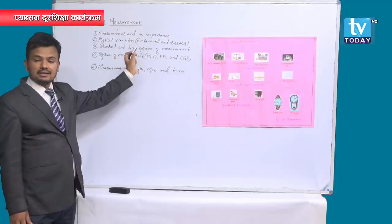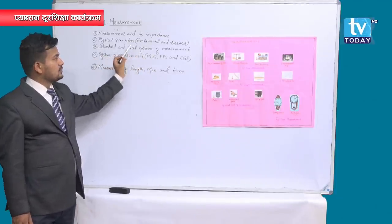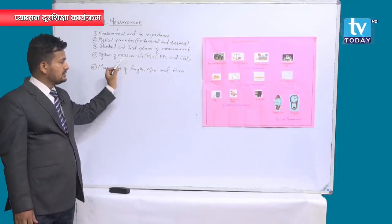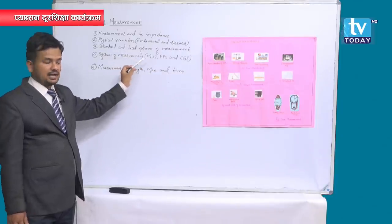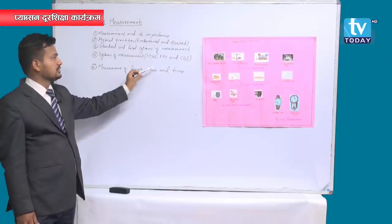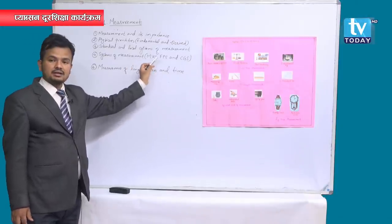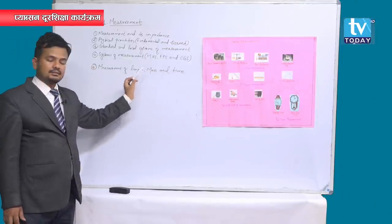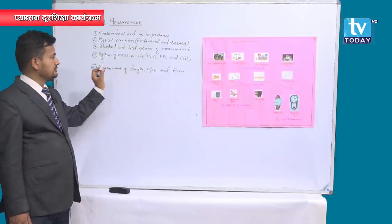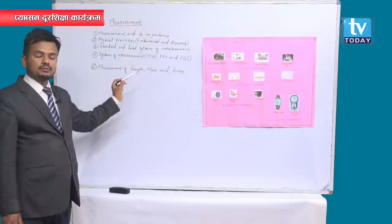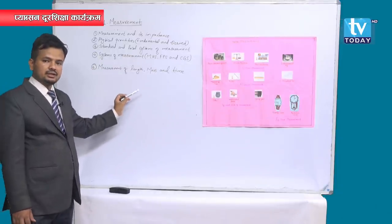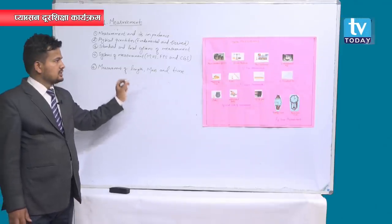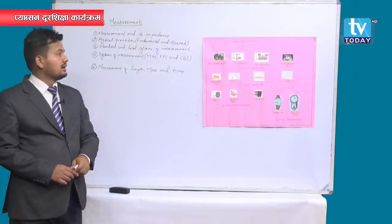We will cover fundamental and derived quantities, standard and local systems of measurement. The systems of measurement commonly used in our country and around the world are MKS, FPS, and CGS. After that we will look at measurement of length, mass, and time. If time supports us, we will also do some numerical questions and conversions from one unit to another.